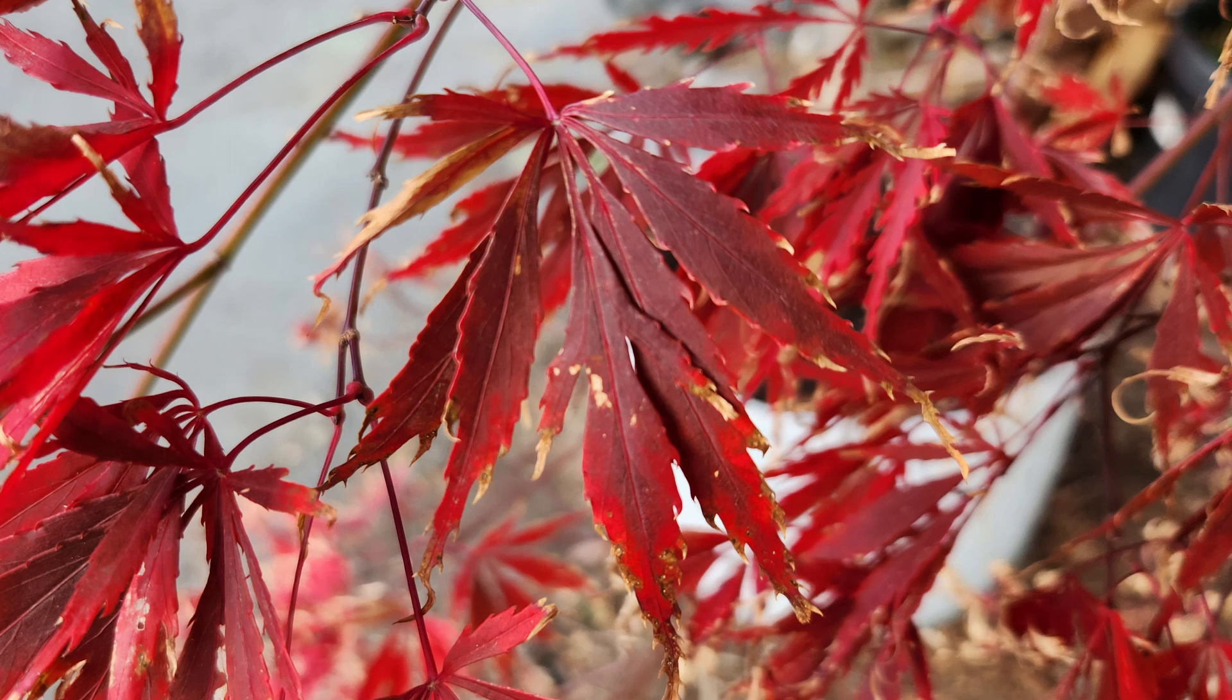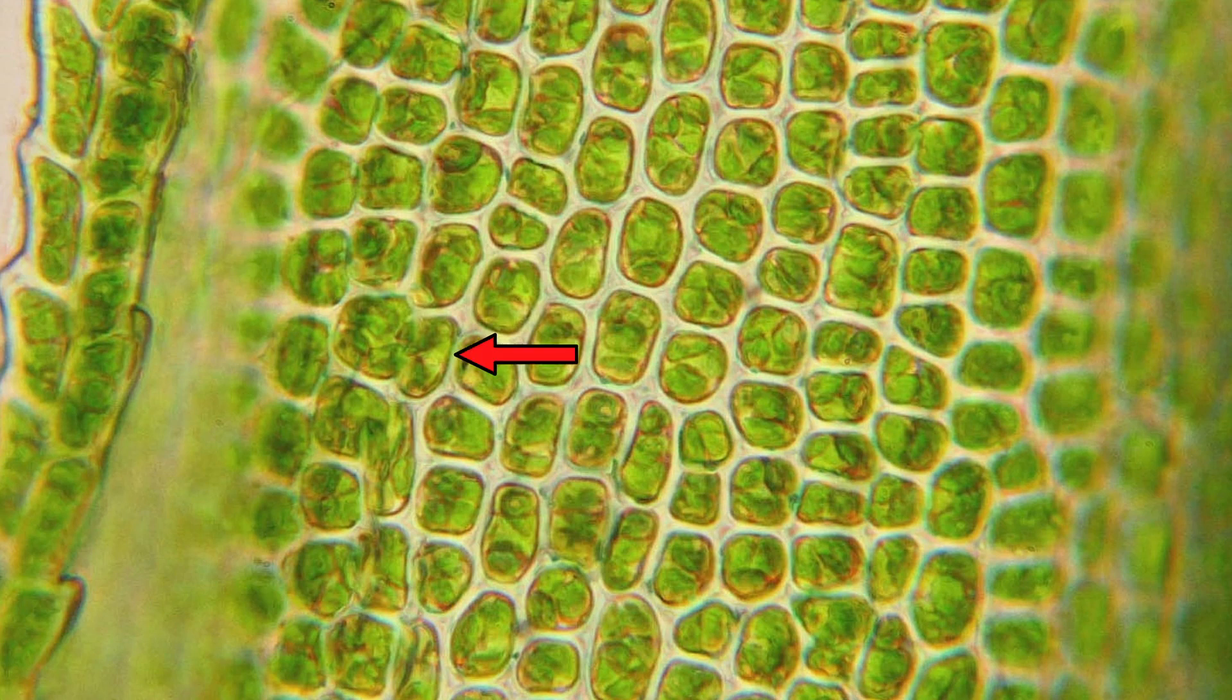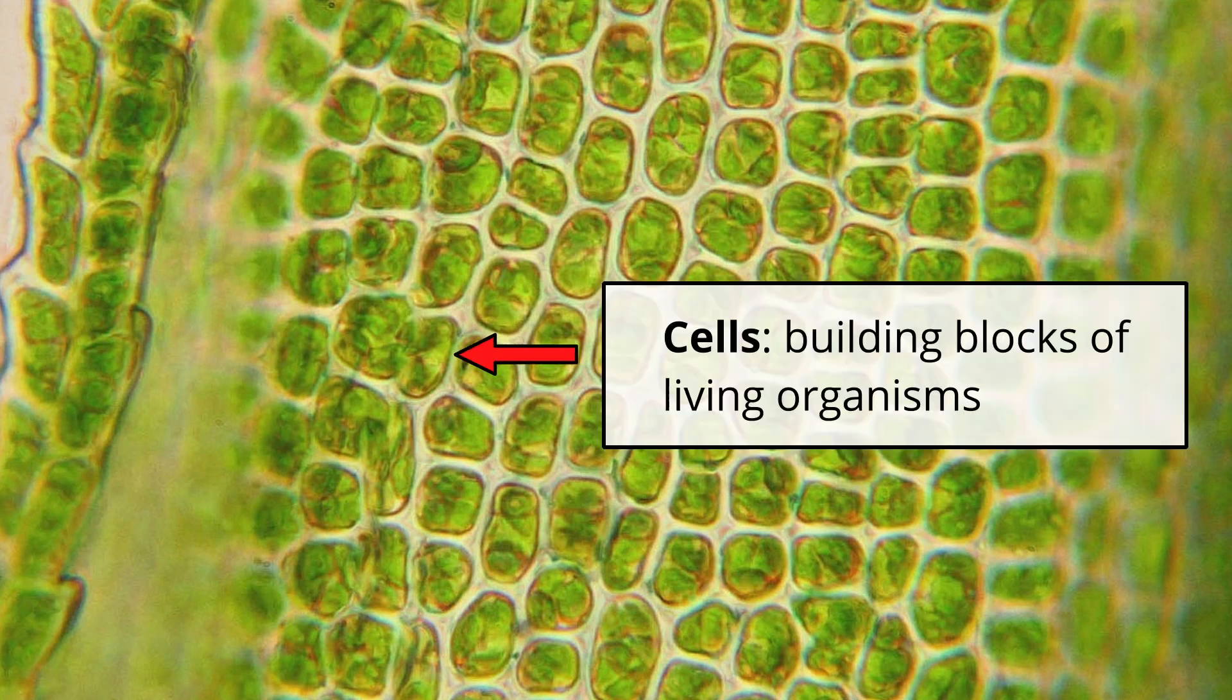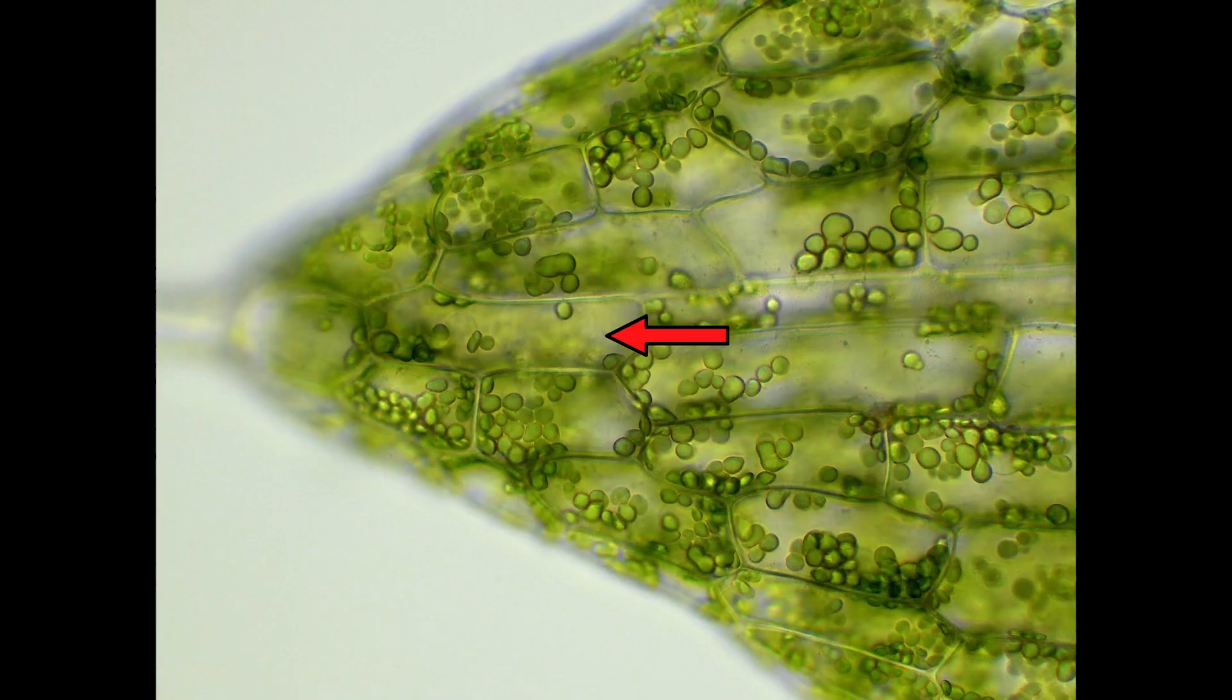If you take a microscope and you zoom way in, you'll find plant cells. These are the fundamental building blocks of a plant. All living things are made of cells and plant cells have certain unique features.